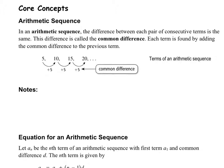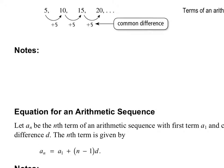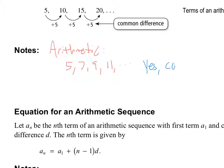Is 5, 7, 9, 11 an arithmetic sequence? Yes, it is. And the common difference is 2.